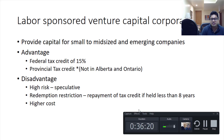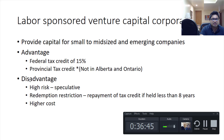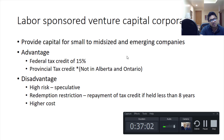Labor sponsored venture capital corporations (LSVCCs) are structured to provide capital for small to mid-size and emerging companies, organized by labor organizations and unions of provinces. If you invest, you get a federal tax credit of 15%, plus provincial tax credits in most provinces (not Alberta or Ontario). Disadvantages: they are high risk and speculative because they invest in small companies. If you redeem before eight years, there is a clawback on the tax credit. They also have higher costs.